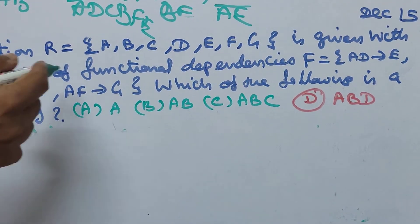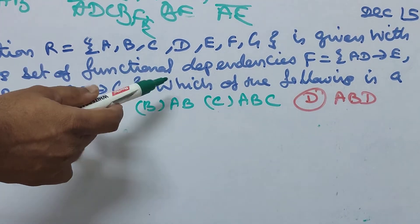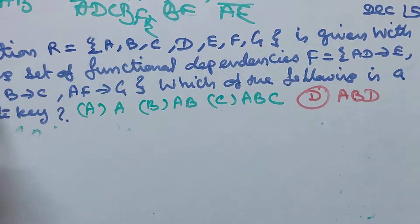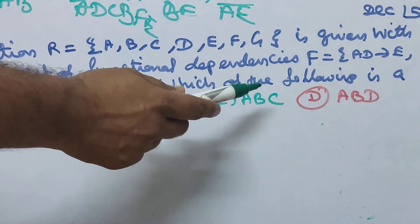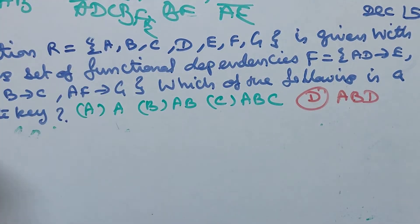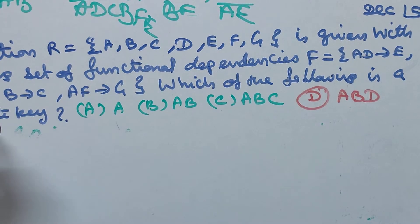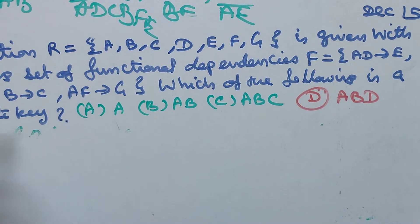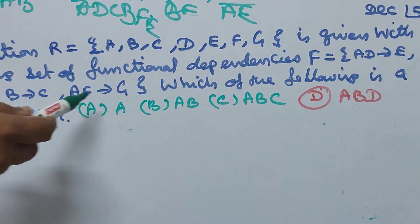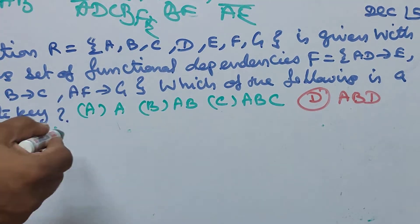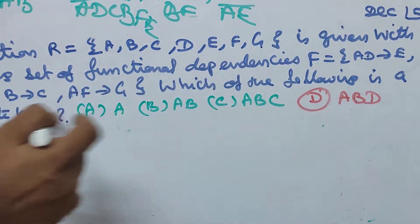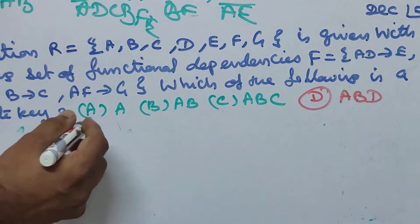Next, December 2015. A relation R equal to A, B, C, D, E, F, G is given with the following set of functional dependencies: AD implies C, B implies F, B implies C, AF implies G. Which of the following is the candidate key?